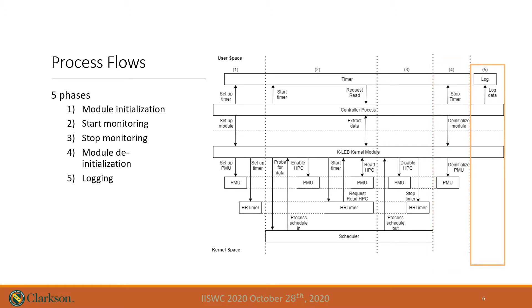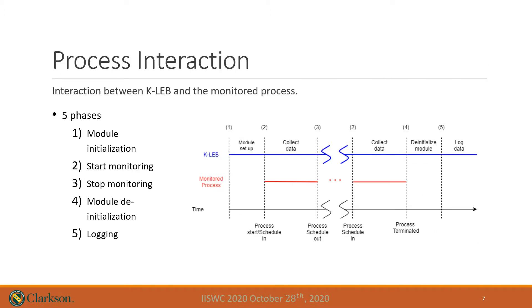The data is then logged to file by the controller process in the last phase. For the process interaction, the figure shows the data collection period of KLAB in relation with the monitored process. After the module is set up, the module will only collect performance counter data when the process is actively being executed, to avoid noise interference from other processes. After the process is terminated, the module will be de-initialized and log all the performance counter data to file.